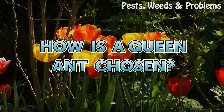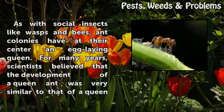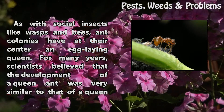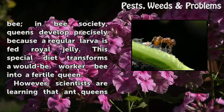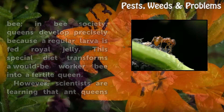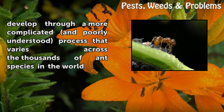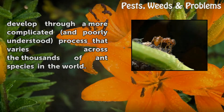How is a queen ant chosen? As with social insects like wasps and bees, ant colonies have at their center an egg-laying queen. For many years, scientists believed that the development of a queen ant was very similar to that of a queen bee. In bee society, queens develop precisely because a regular larva is fed royal jelly. This special diet transforms a worker bee into a fertile queen. However, scientists are learning that ant queens develop through a more complicated and poorly understood process that varies across the thousands of ant species in the world.